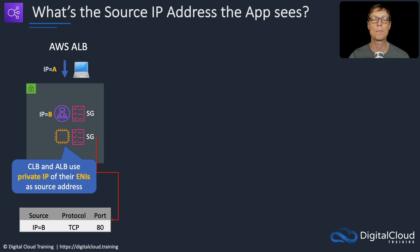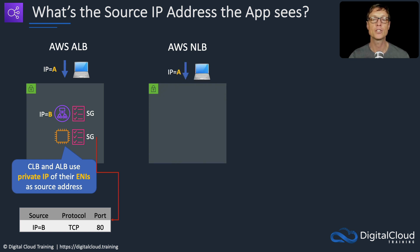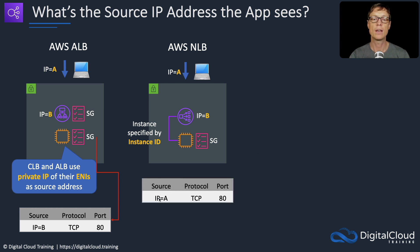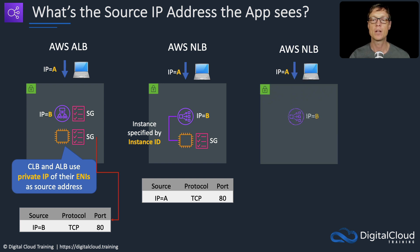With an NLB it gets a bit more complicated. The client connection comes in with IP address A, the Network Load Balancer has IP address B, and then there's the EC2 instance. When the instance has been added to the target group by specifying the instance ID, the source IP address seen by the application is IP A — the IP of the client — because we specified by instance ID.